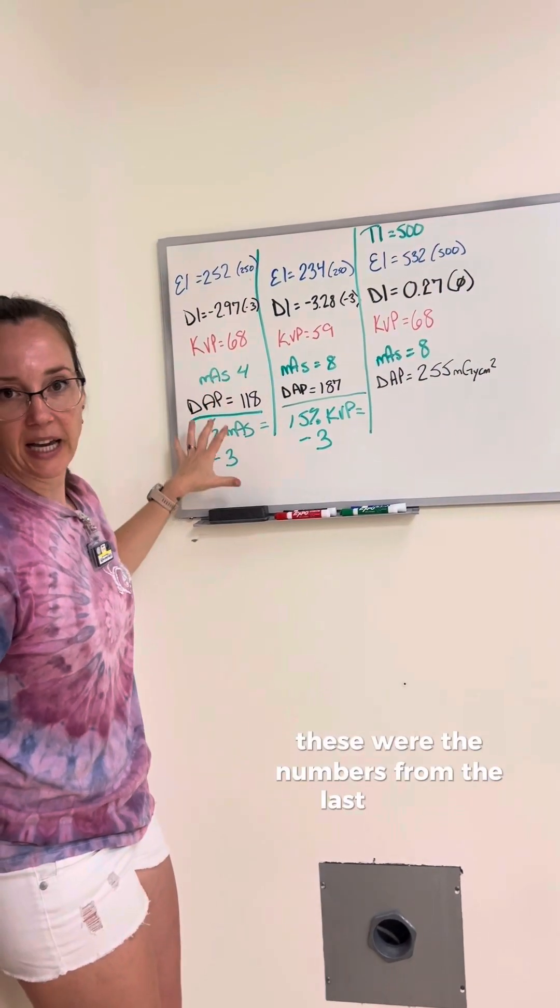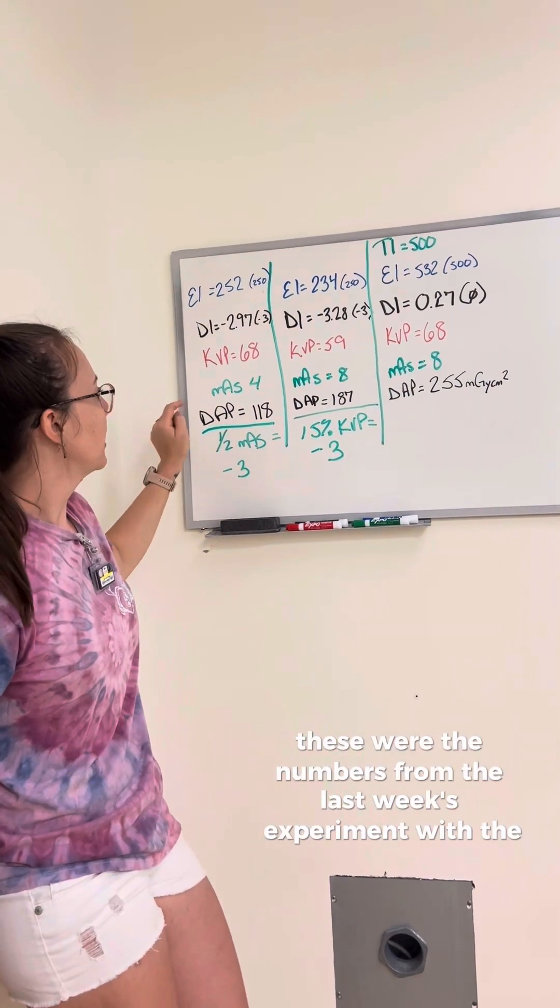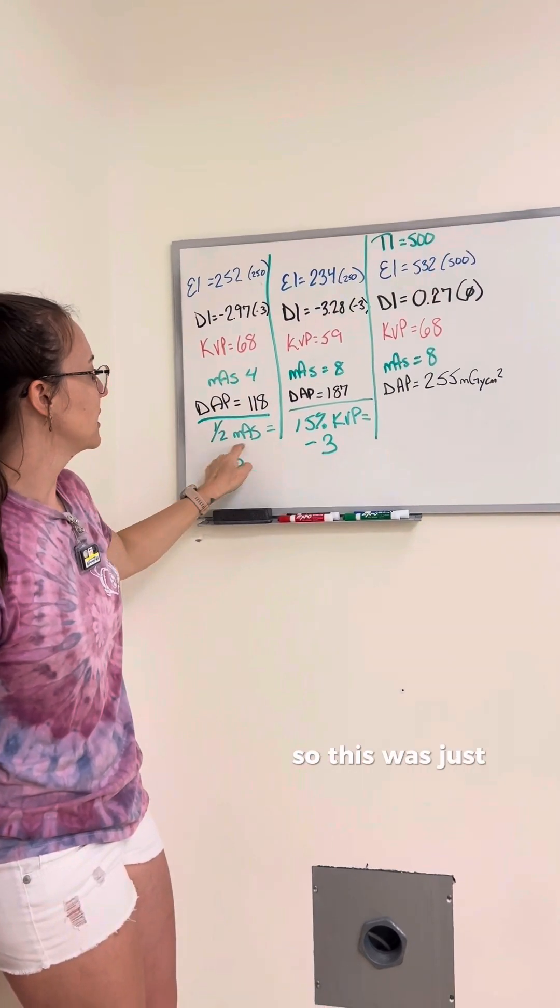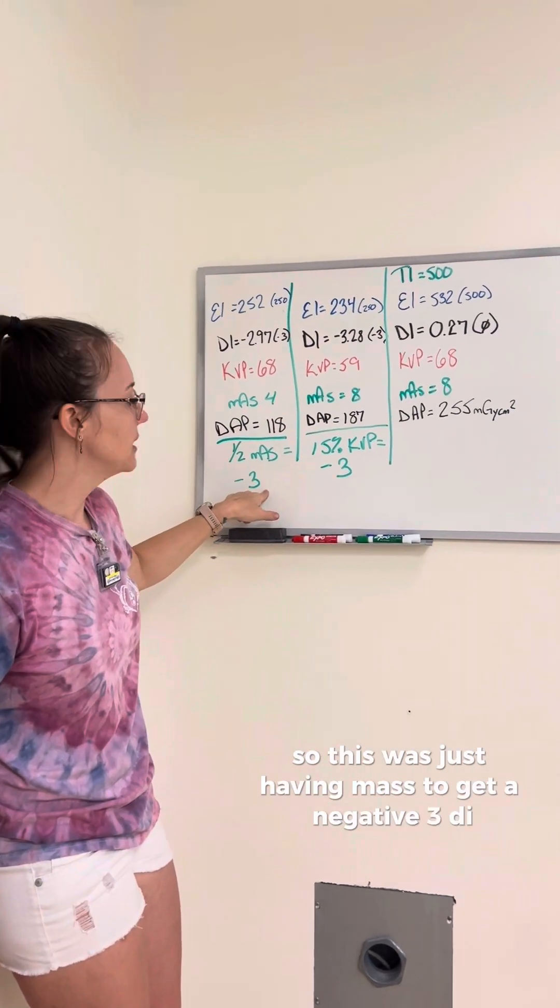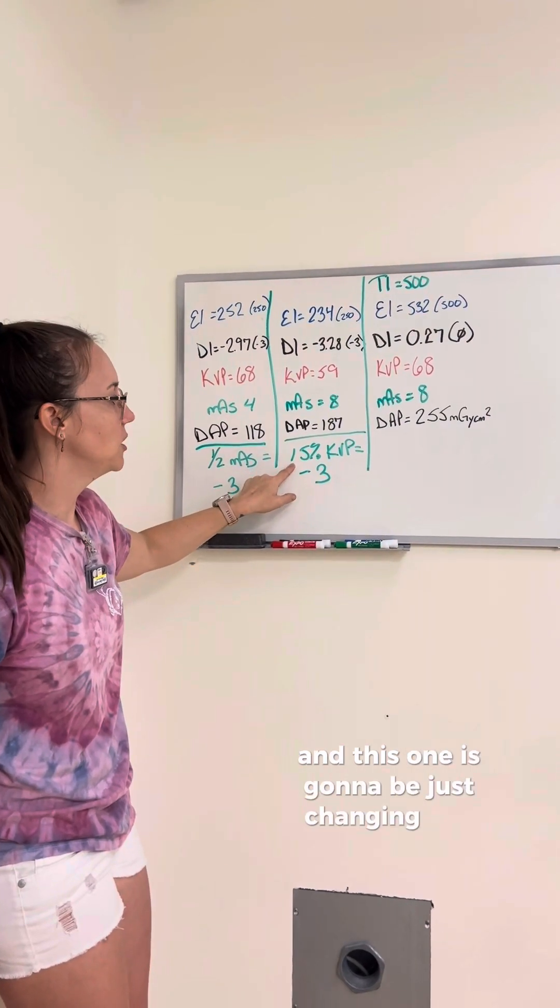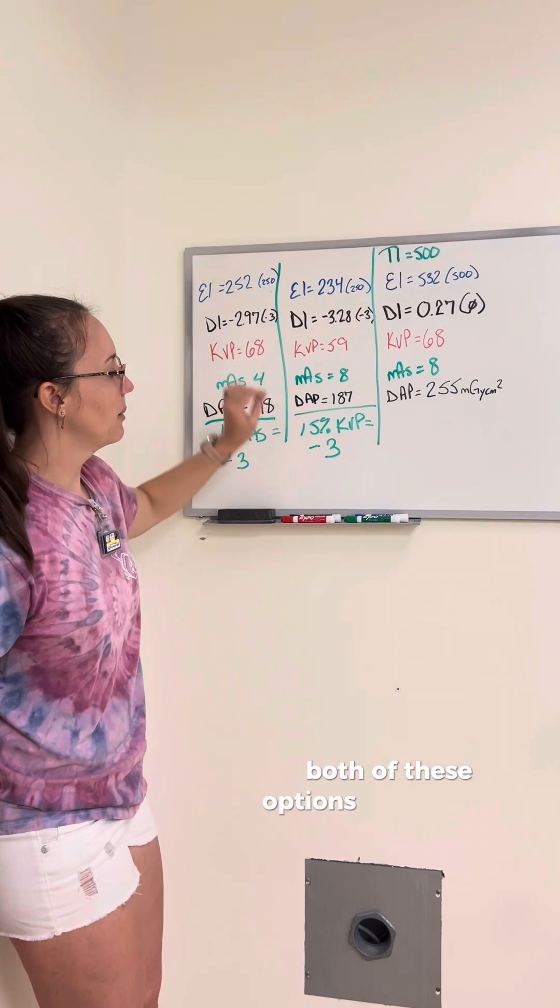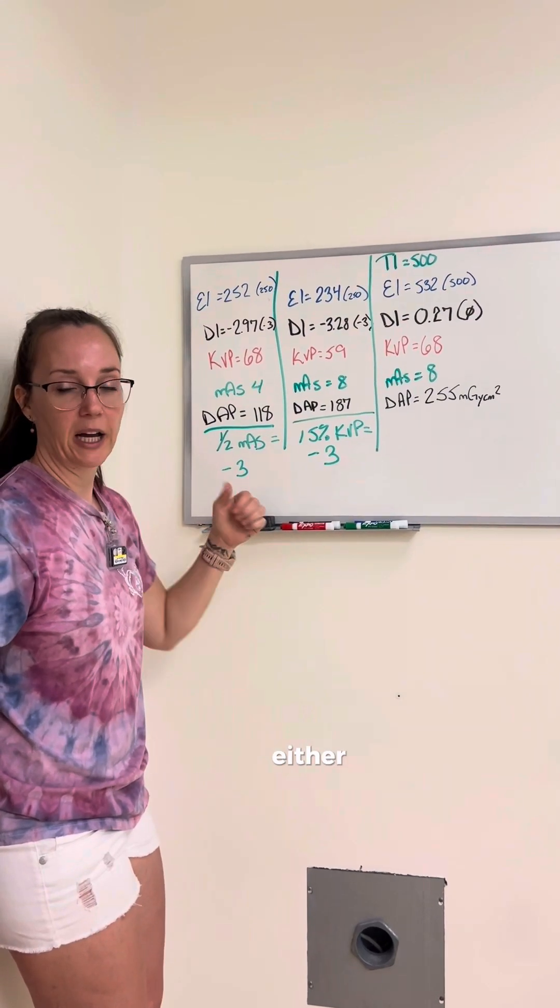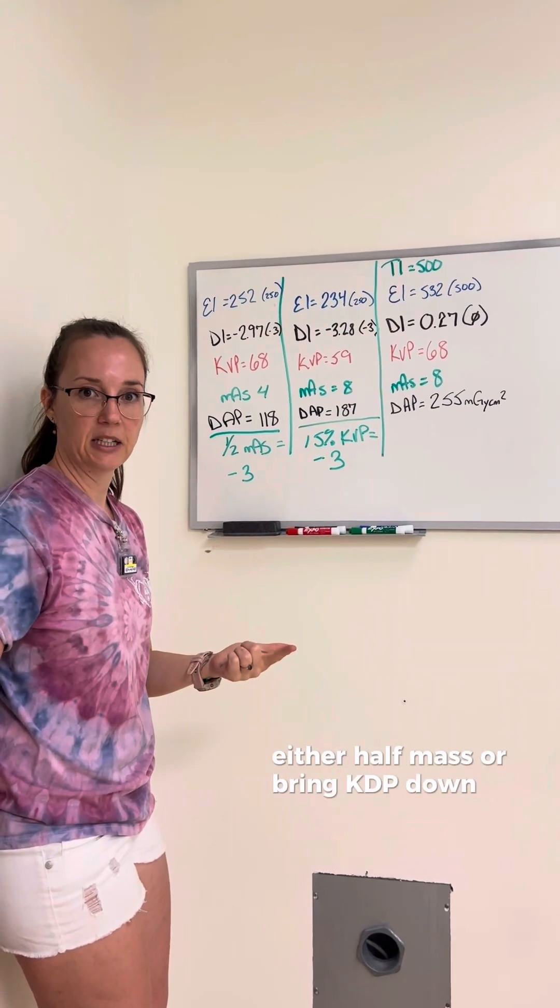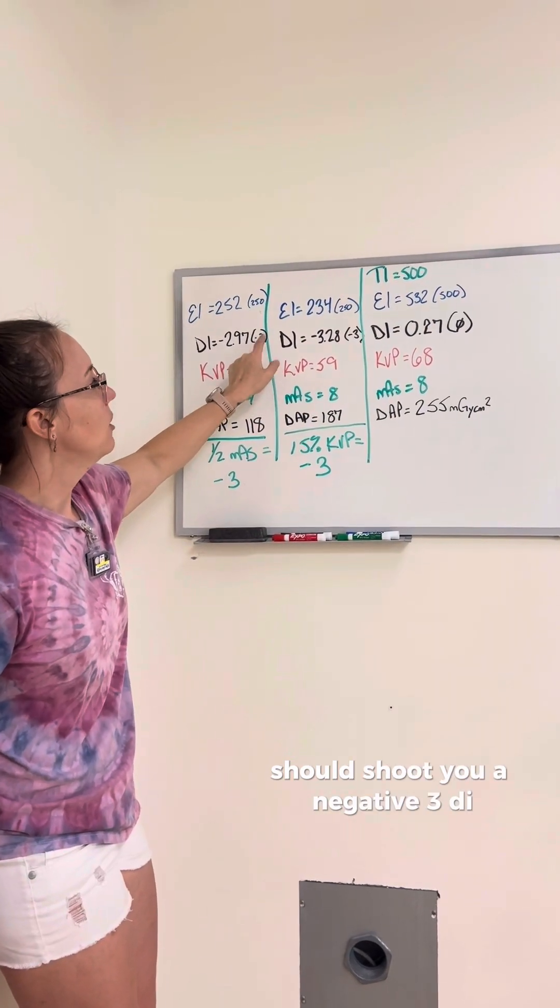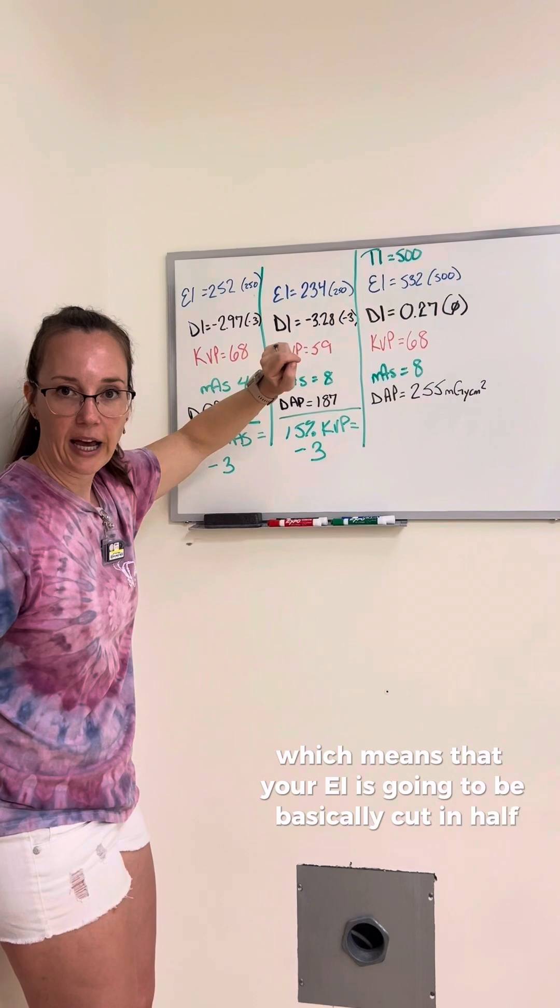These were the numbers from last week's experiment with just changing the mass, but you'll notice that the KVP is still the same. So this was just halving mass to get a negative 3 DI, and this one is going to be just changing KVP 15% to get a negative 3. Both of these options, the 15% rule, either half mass or bring KVP down 15%, should shoot you a negative 3 DI, which means that your EI is going to be basically cut in half.